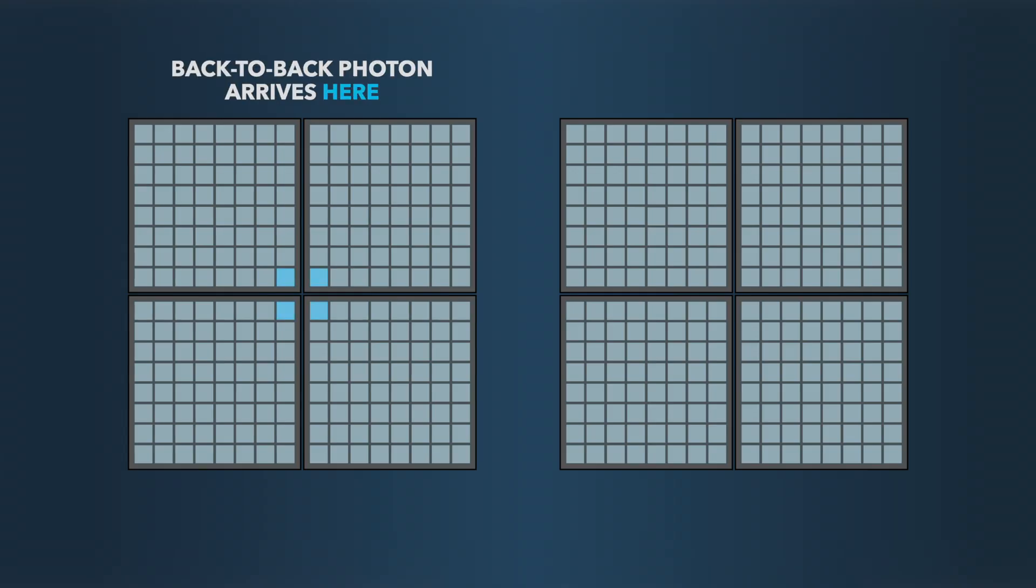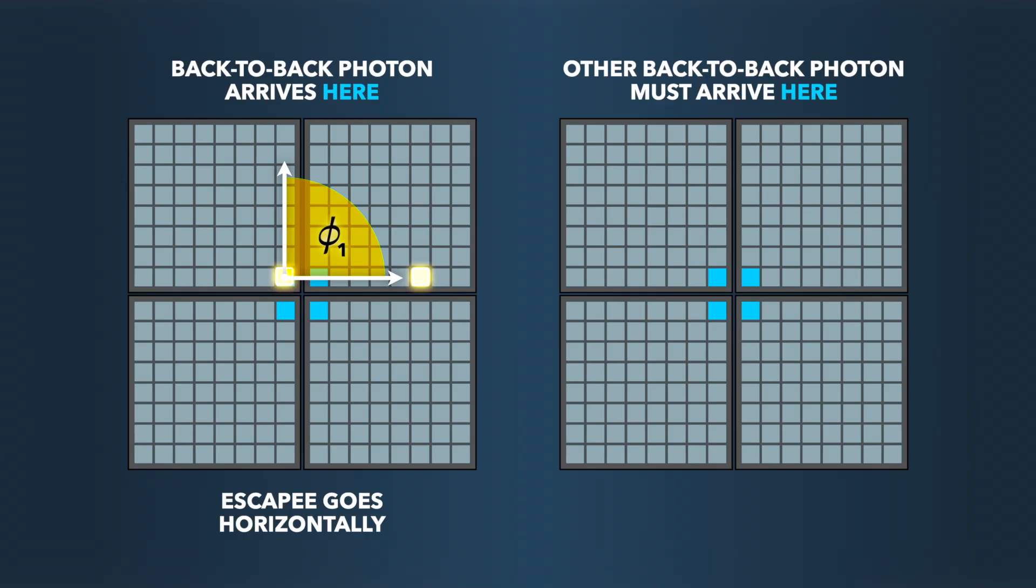For example, the back-to-back photon arrives in the middle, and the escapee goes horizontally. Then we know that the first hit on the other screen will also be in the middle, because they are back-to-back. Every time this happens, we will look at where the other escapee went, measuring phi2.